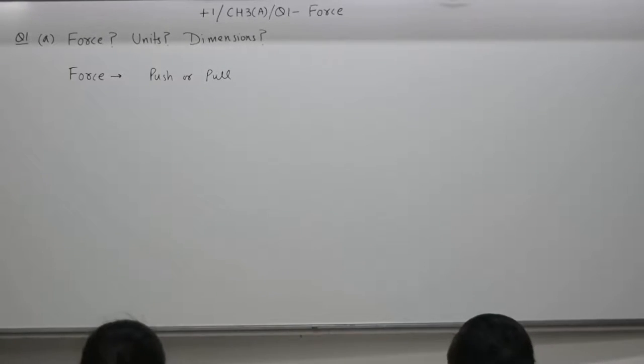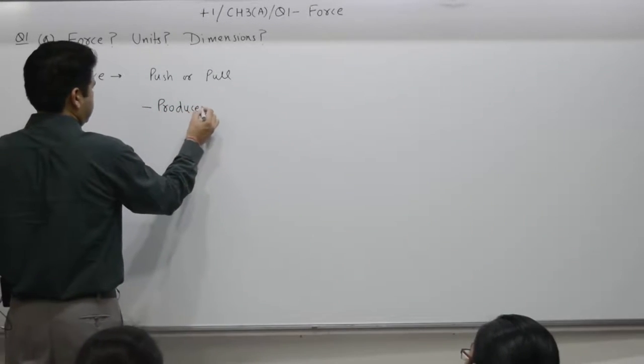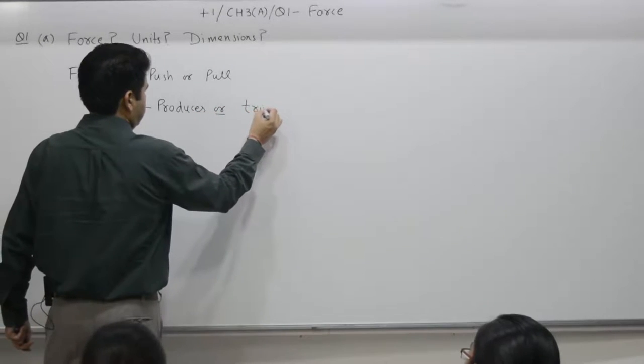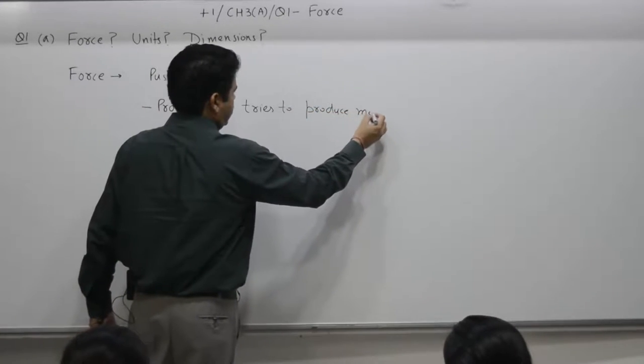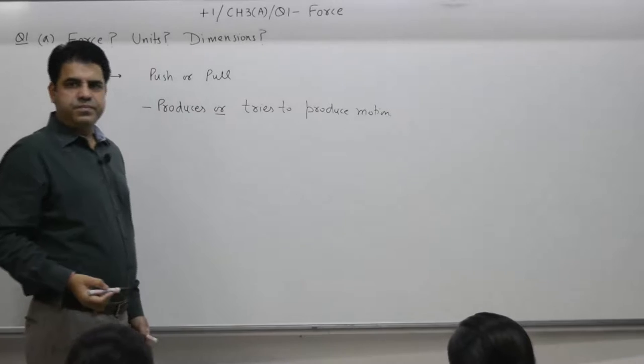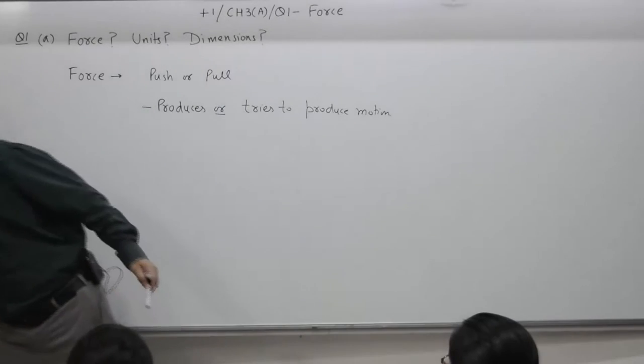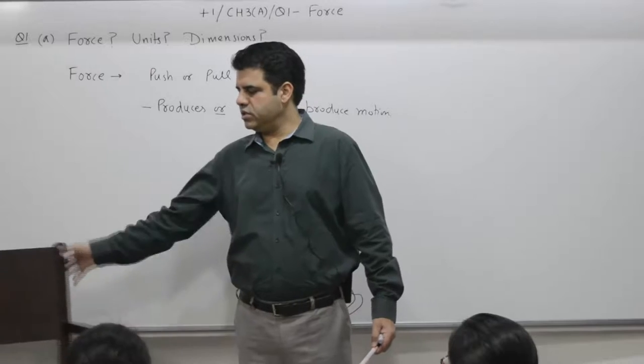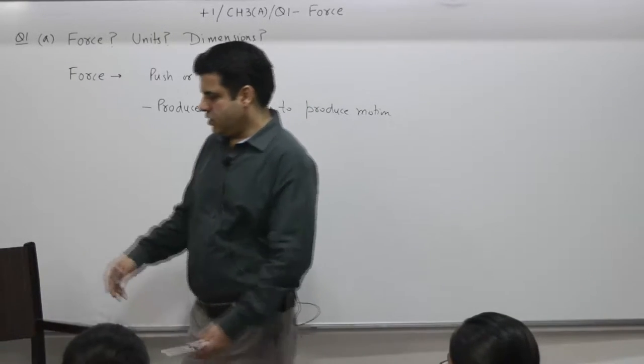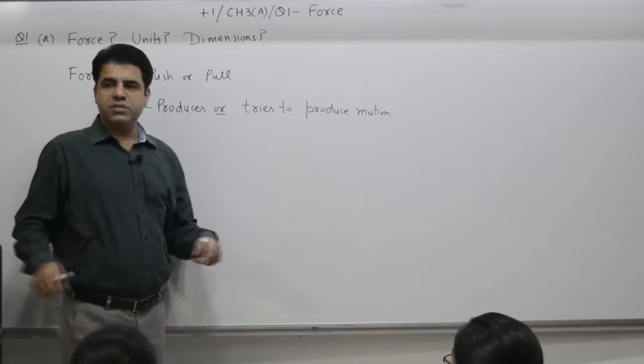Force is a push or a pull - can do what? Number one: produces or tries to produce motion. Example: an object is at rest, a chair. You apply force and you set it in motion. This force was sufficient to set it in motion because the mass of the object was less.